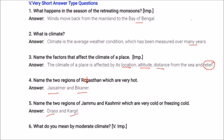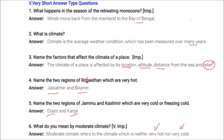Moderate climate refers to the climate that is neither very hot nor very cold. Generally, this climate is found in the sea region or seashore region.